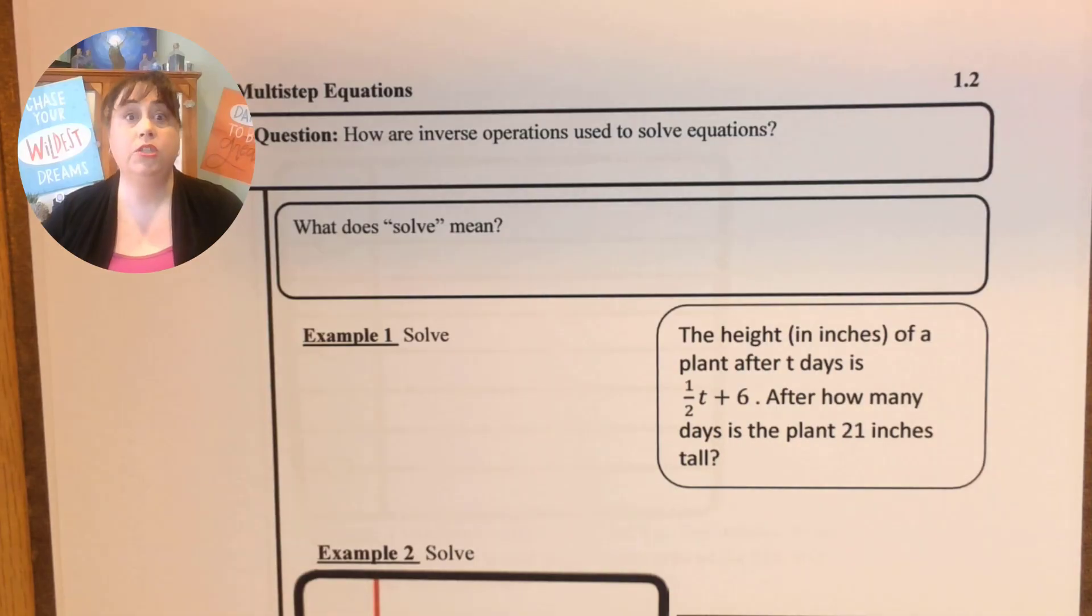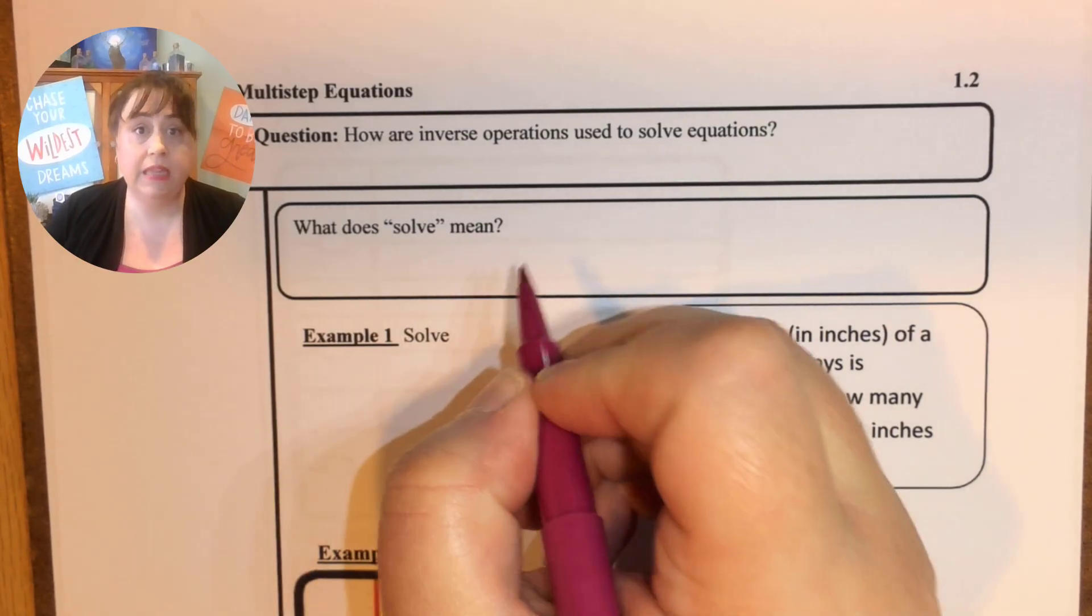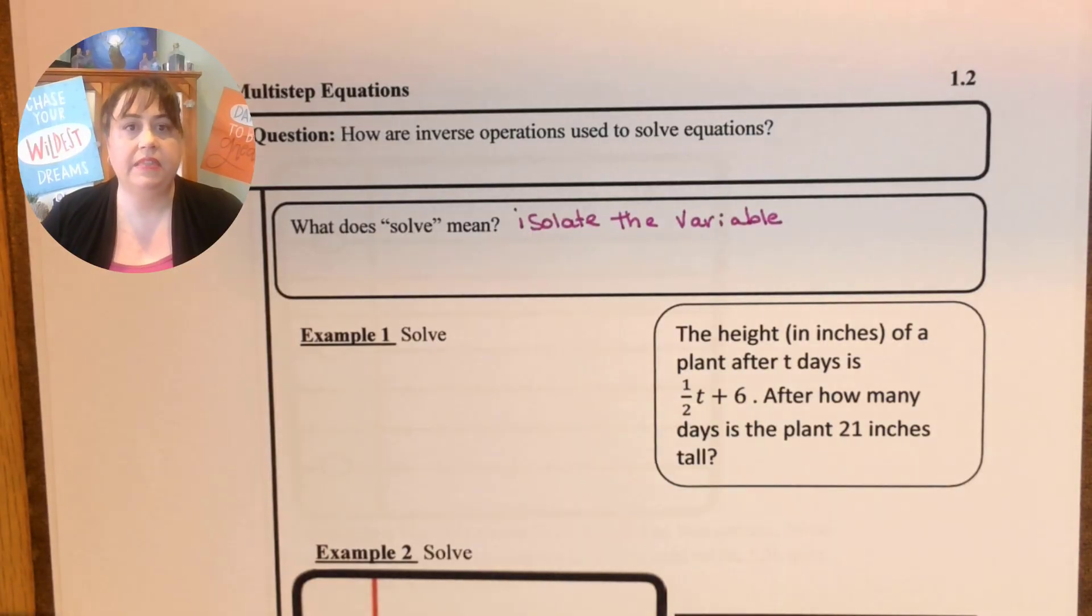So let's get started. Let's review what solve means. Solve means that you need to isolate the variable. And if you forgot what isolate means, isolate means to get it alone or by itself.